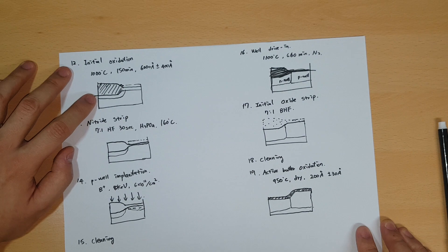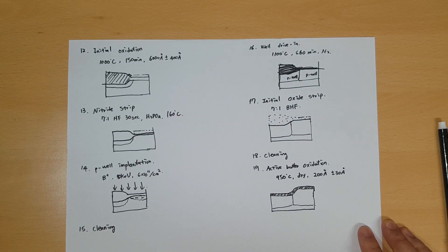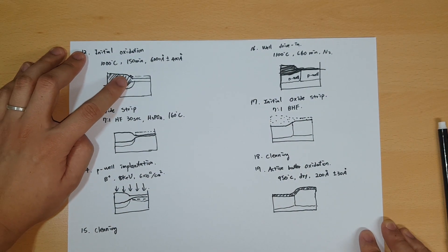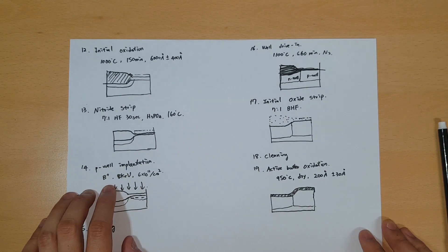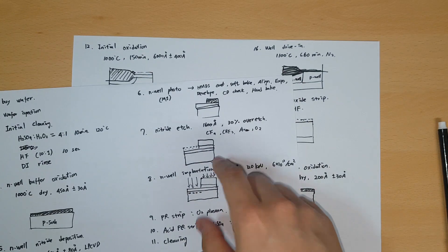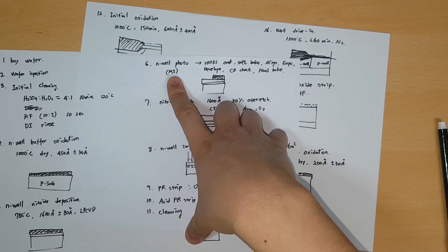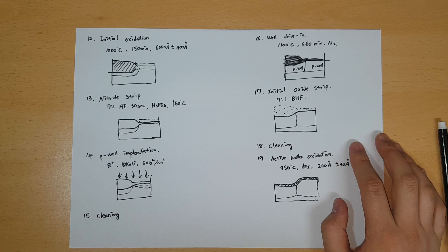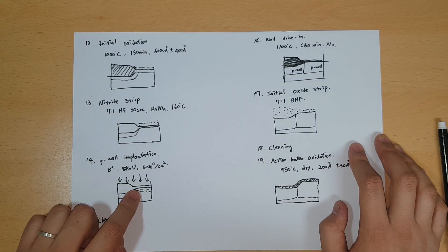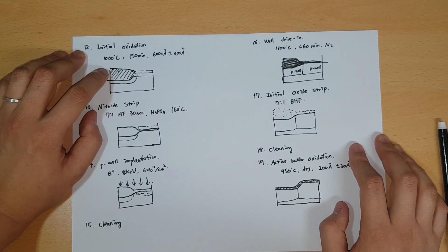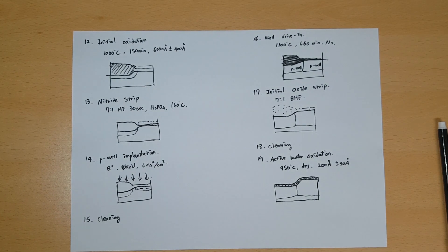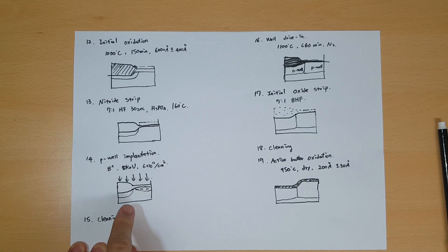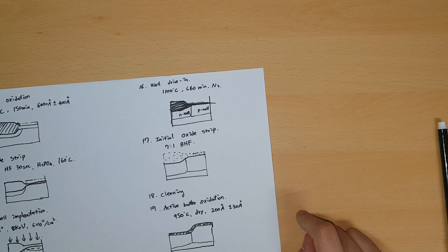Step 12: you do the initial oxidation — these parts have grown bigger. Step 13 is the nitride strip in this region, which is now gone. Step 14 is P-well implantation with boron. When we formed the N-well we needed a mask, but for the P-well we don't need a separate mask — the oxide itself acts as the mask. This is a smart method to reduce the number of masks used. After that you do cleaning and well driving.